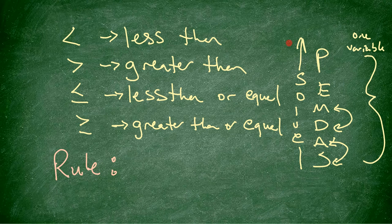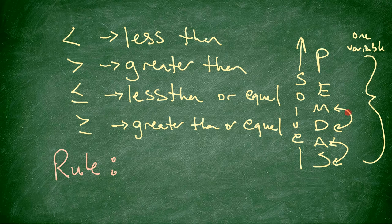We're still going to solve it the same way. You're going to use PEMDAS in reverse — start at the bottom and work your way up. Addition gets rid of subtraction and vice versa. Division gets rid of multiplication and vice versa.